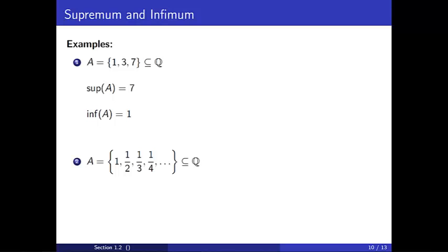For another example, suppose A consists of the numbers 1, 1 half, 1 third, 1 fourth, etc. So A contains infinitely many numbers of the form 1 over n. We will consider A as a subset of the rational numbers.